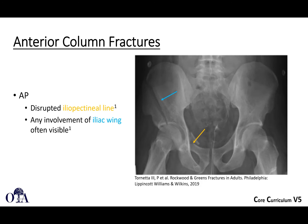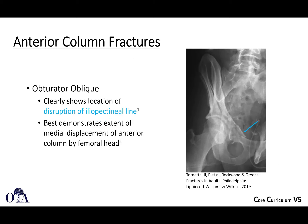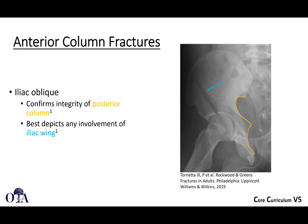On the AP, you're going to see a disrupted iliopectineal line. You can see a nice intact iliopectineal line for comparison and disruption at the fracture site. The iliac wing fracture, if you have the high type of anterior column variant, you're going to see an iliac wing fracture on the AP view. On the obturator oblique, you should very clearly see disruption of that iliopectineal line and anterior column disruption, and any medial femoral head displacement. On the iliac oblique view, you should be able to confirm that the posterior column is intact, and the iliac wing fracture will probably be seen a little better.